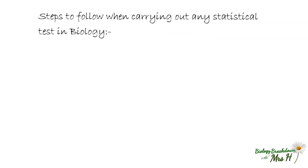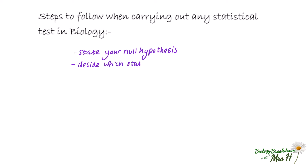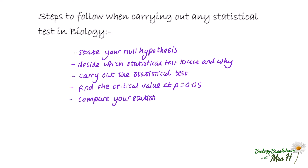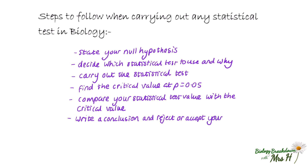There are certain steps you need to follow when carrying out any statistical test. You could be asked questions on any of the steps, so it is important you understand them all. You need to: state your null hypothesis, decide which statistical test to use and why, carry out the statistical test, find the critical value at p equals 0.05, then compare your statistical value with the critical value and write a conclusion, and reject or accept your null hypothesis.